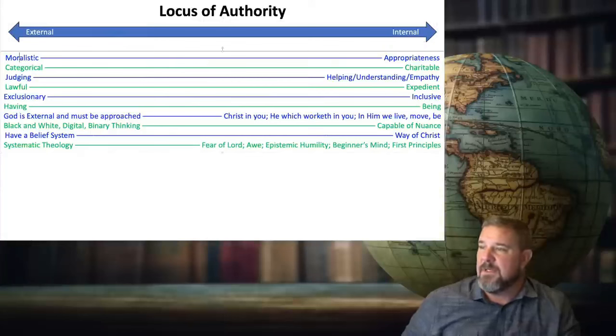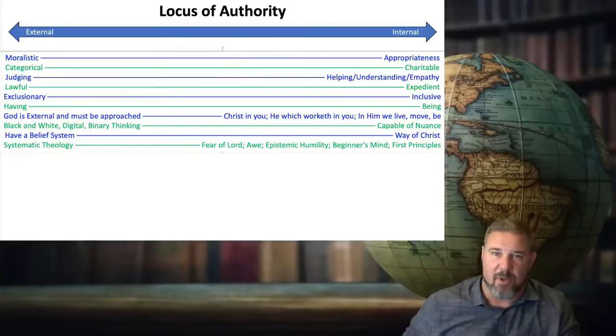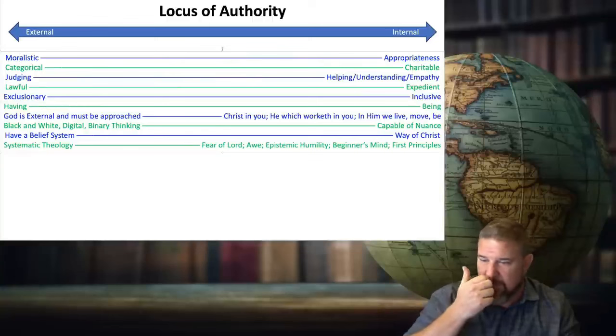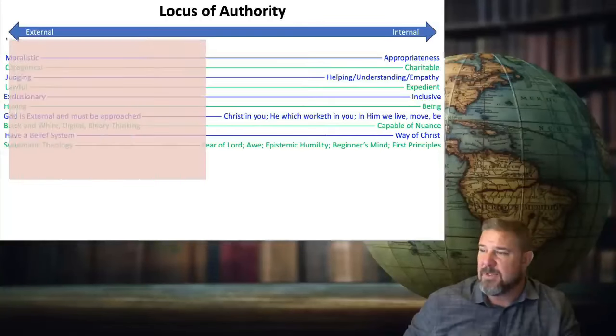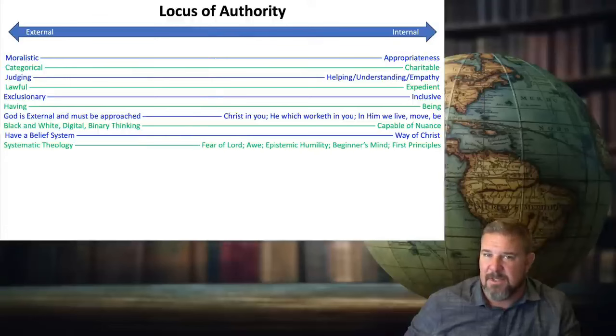So all of these are going to be internal versus external. External is moralistic, internal is based on appropriateness. So when you hear people talk, and just to give you a clue, when I hear people talk, I can hear all of this in how they talk and tell that they're stage three, like this, I can tell fast.